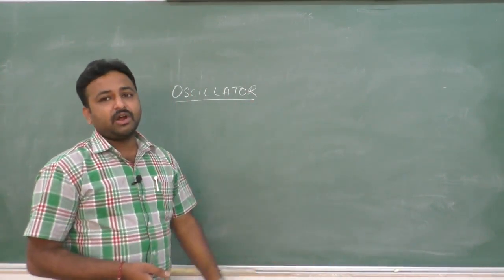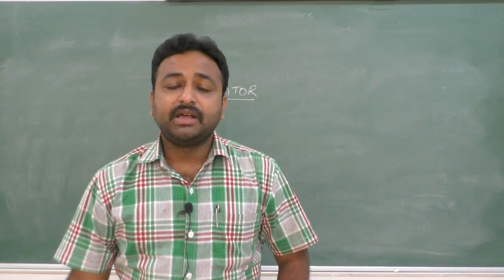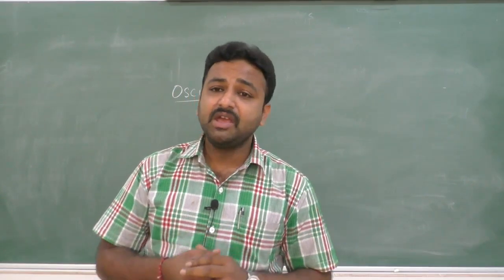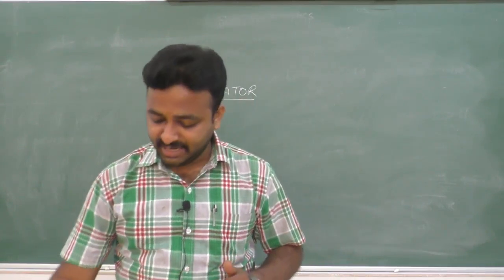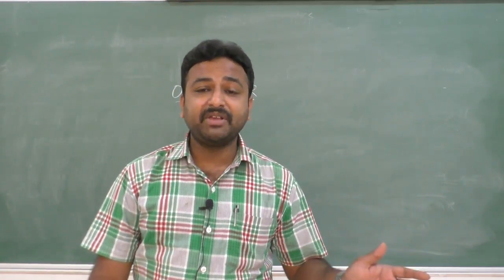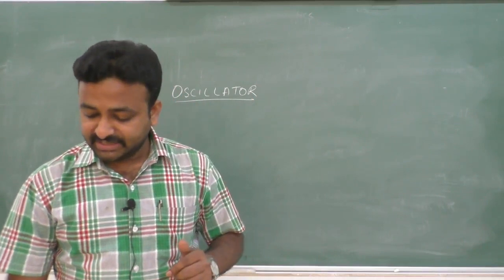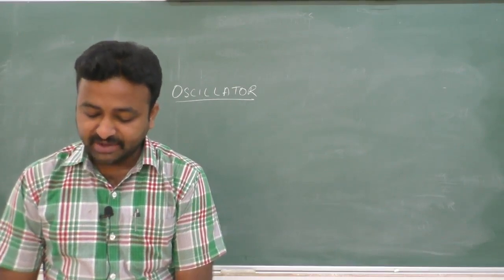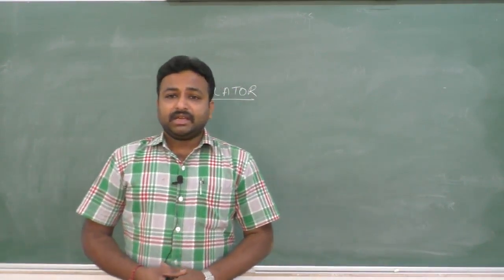In this session, let us learn about oscillators. I will define what is meant by an oscillator. Before defining oscillator, let us know what is meant by oscillation. After defining oscillator, let us learn about types of oscillators. Then let us know what is meant by damped oscillation and undamped oscillation. After that, we will study the basic principle of oscillators and derive an expression for the voltage gain of the oscillator.